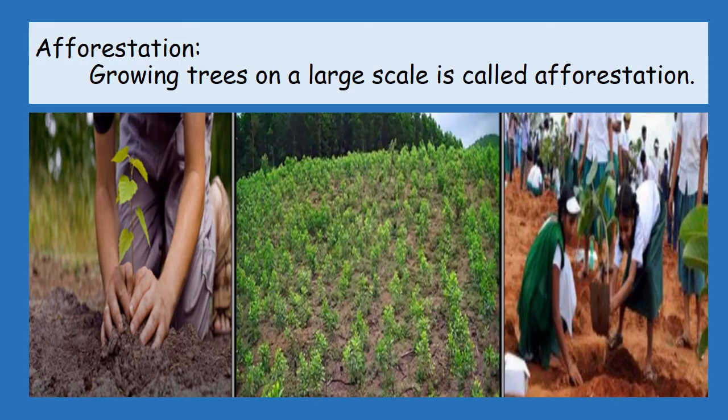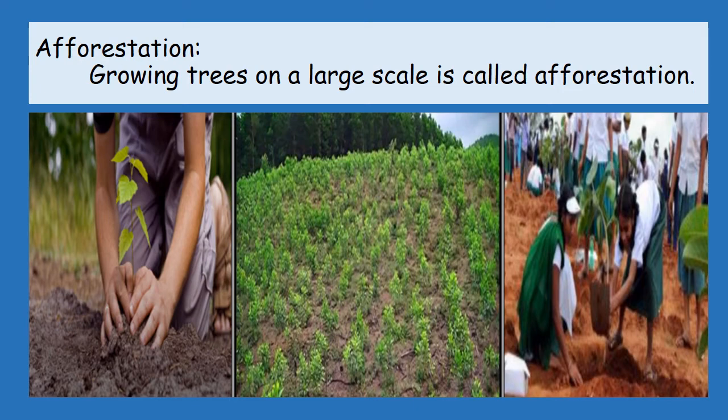Afforestation. Growing trees on a large scale is called afforestation. Growing plants — to grow grass or some other plants to bind the soil particles together when the land is not being used for farming.